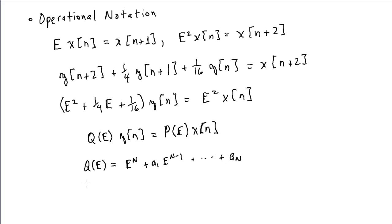And similarly, our P polynomial in E becomes B0 E to the N plus B1 E to the N minus 1 plus BN. Again, any of these coefficients in a particular example may turn out to be zero.